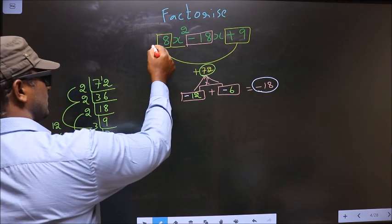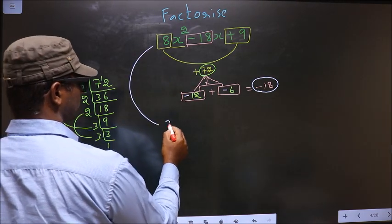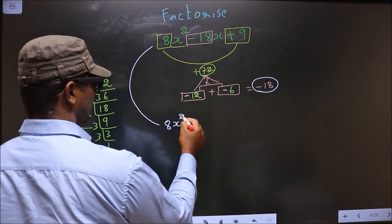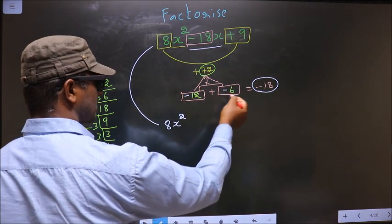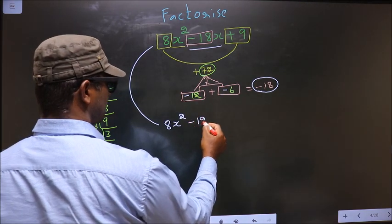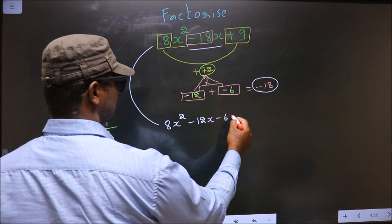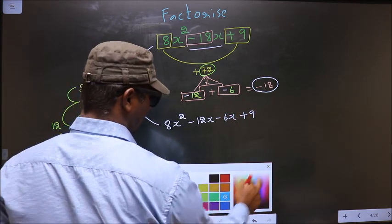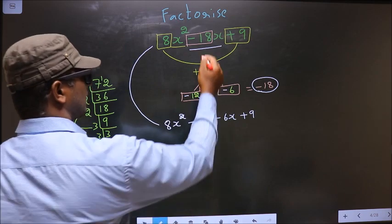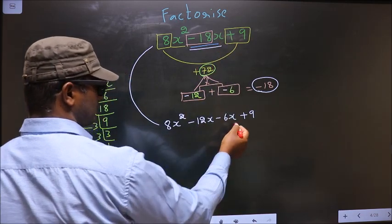Now you should change this to 8x square. In place of minus 18x, you should be writing this: minus 12x minus 6x plus 9. Did you understand? In place of minus 18x, I have written this.